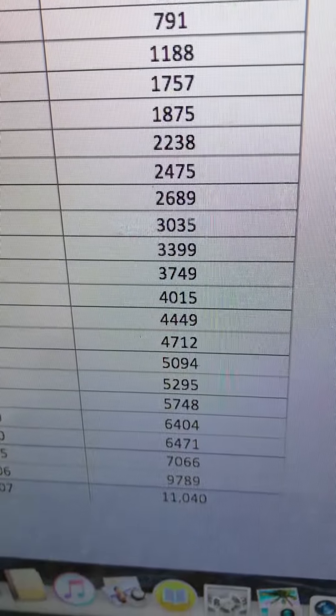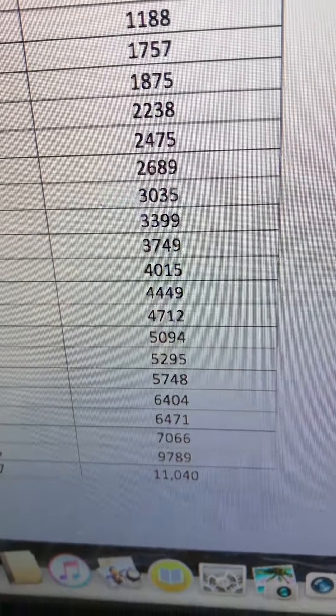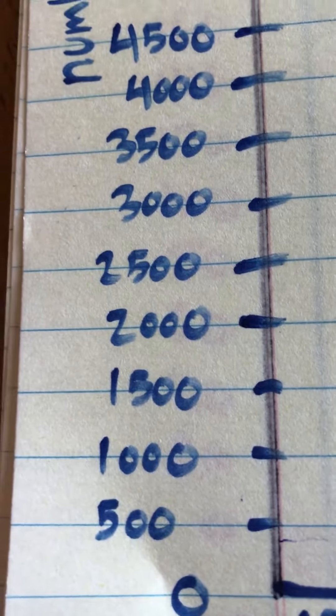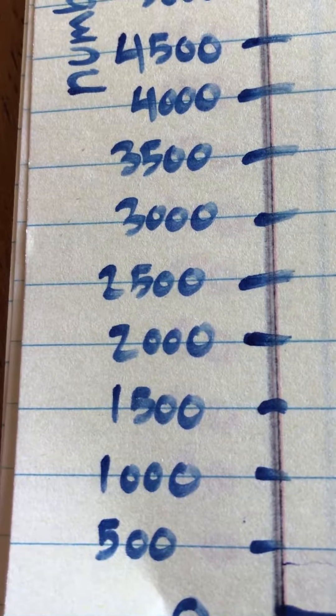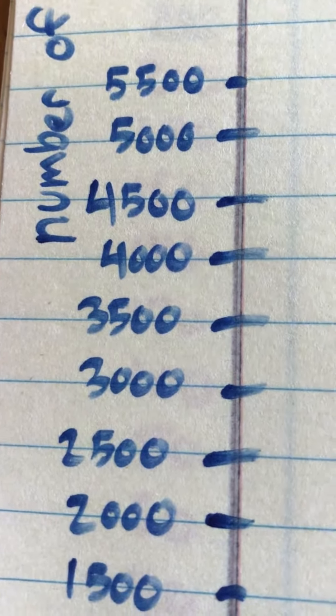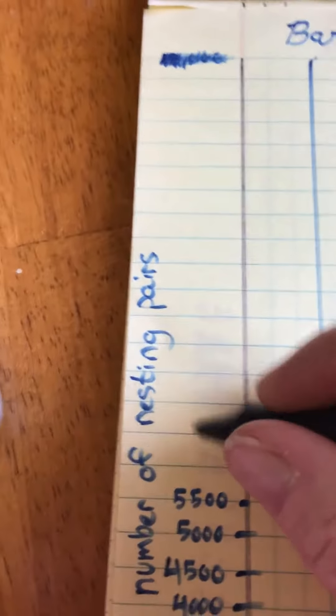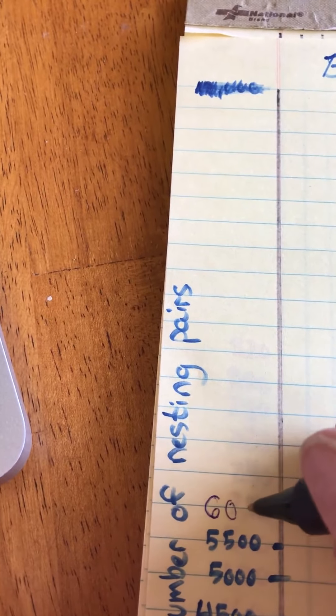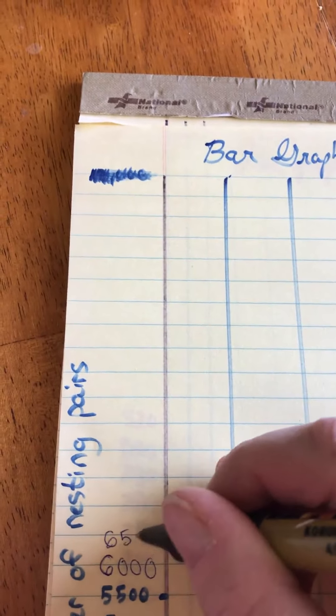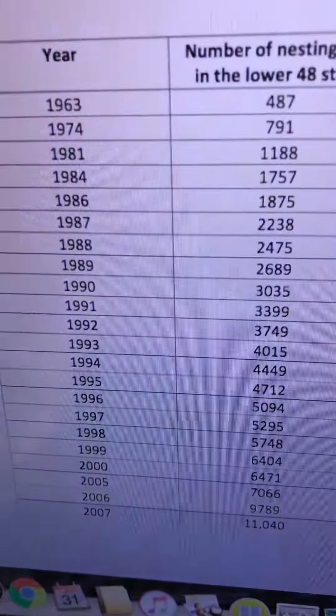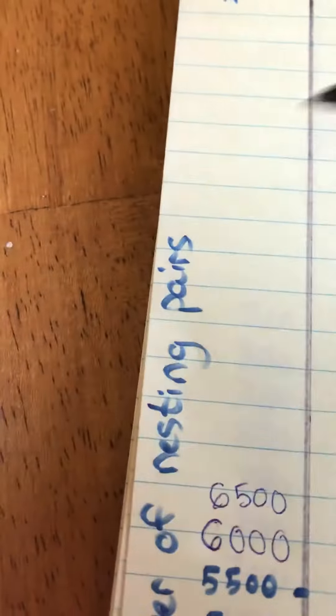But I'll give you an example. So I noticed that the largest number of nesting pairs here goes up to 11,000. So I had to figure out how to divide my paper so that we could get up to 11,000. And what I chose to do was to go by five hundreds. So we went from zero to five hundred plus five hundred to be a thousand plus five hundred to be fifteen hundred, two thousand, two thousand five hundred, three thousand, three thousand five hundred, etc. So after fifty five hundred or five thousand five hundred it would be six thousand, six thousand five hundred, etc. And you would write up until you got to about eleven thousand because that's the highest number that we have on our data.